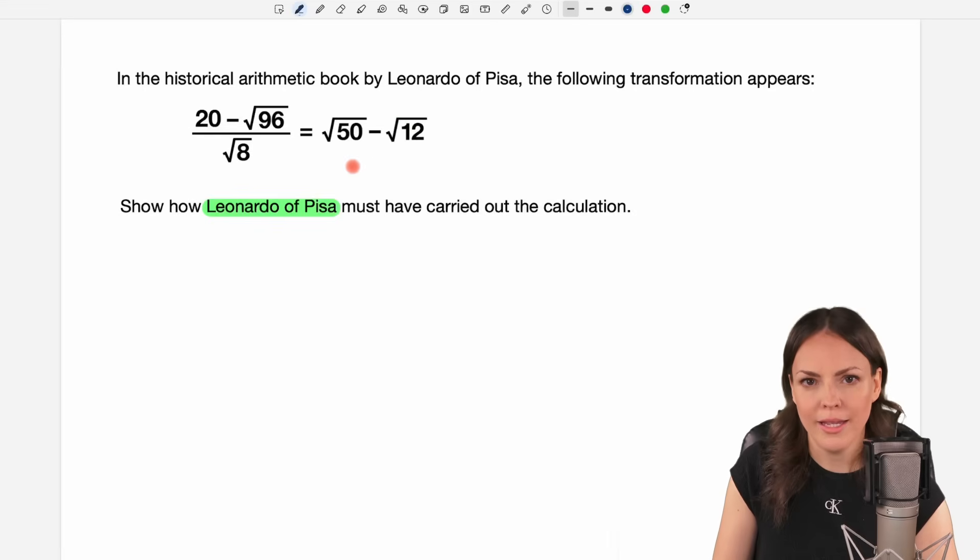So my plan would be to just take the left side of this equation here, start with this expression, transform it step by step, and then hopefully end up with this expression here from the right side.